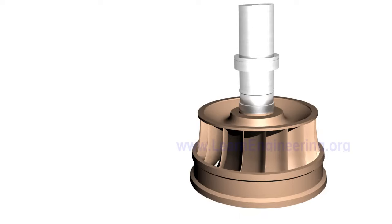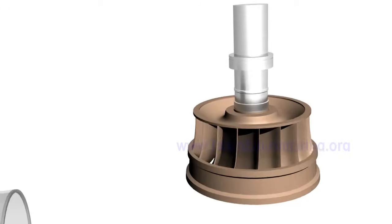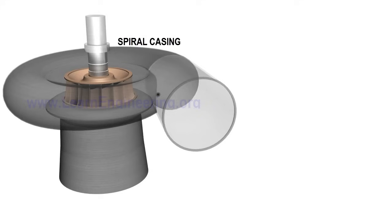The runner is connected to a generator via a shaft for electricity production. This arrangement is fitted inside a spiral casing. Flow enters via an inlet nozzle.